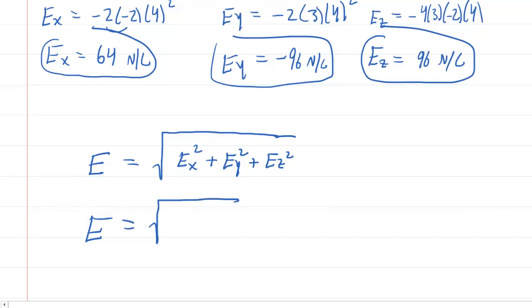So we'll put in our values here. We'll omit units for clarity right now, but it's 64 squared plus negative 96 squared plus positive 96 squared. And then taking the square root of all that. So if you punch this into your calculator, you will get an overall electric field magnitude of about 150. And this will be measured in newtons per coulomb, or an equivalent unit is volts per meter. So this is the correct answer to the question.